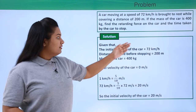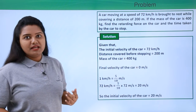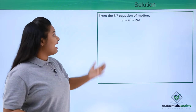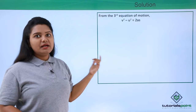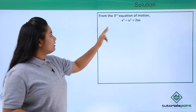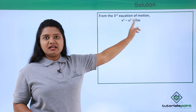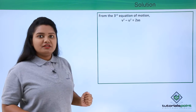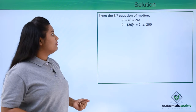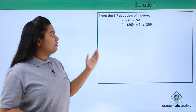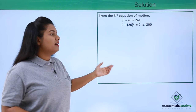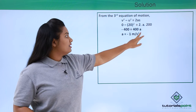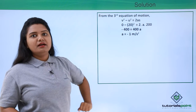Now we can solve the problem. We need to find the acceleration in order to find the force. We'll use the third equation of motion: v² − u² = 2as. We already have the final velocity, the initial velocity, and the stopping distance, so putting in the values: 0² − 20² = 2 × a × 200. This gives −400 = 400a, so the acceleration is −1 meters per second squared.